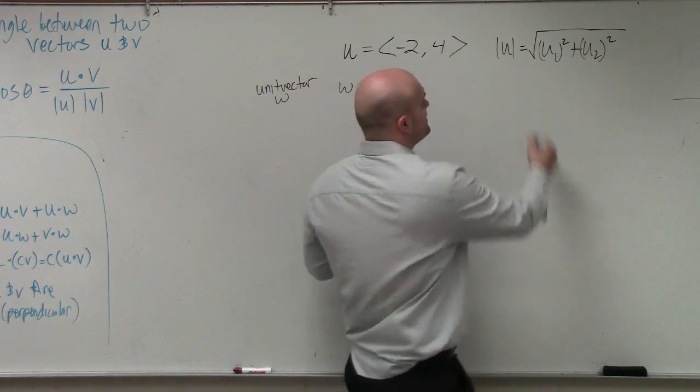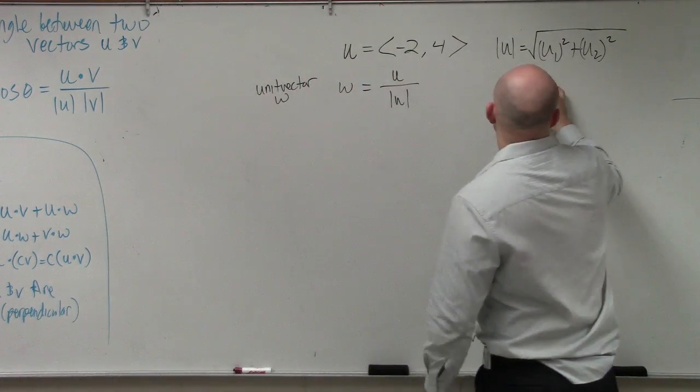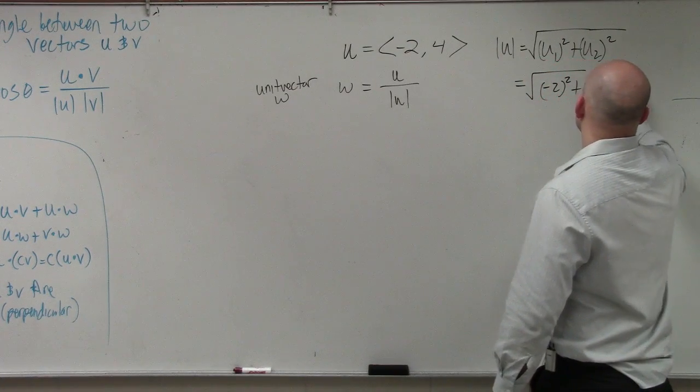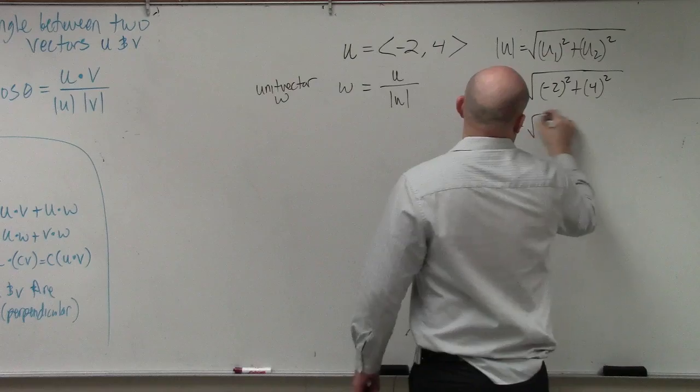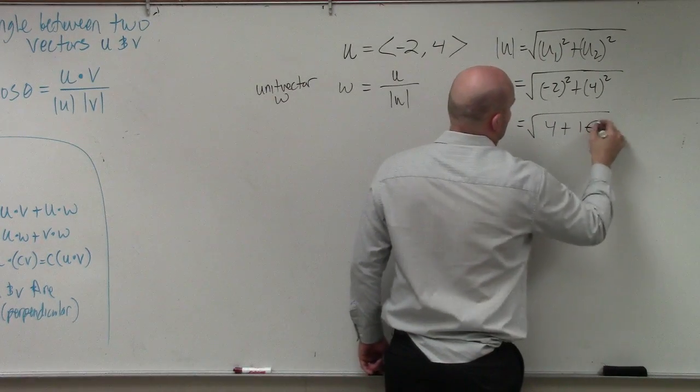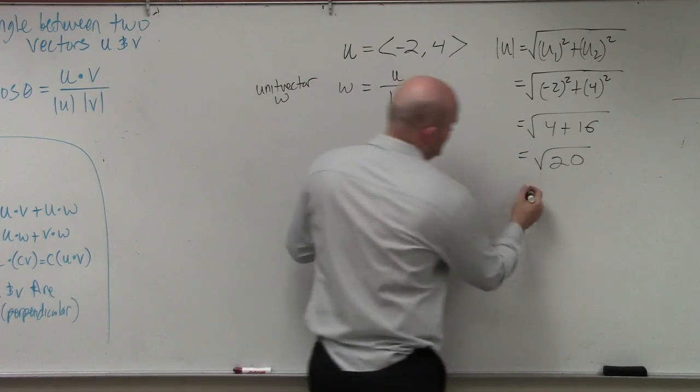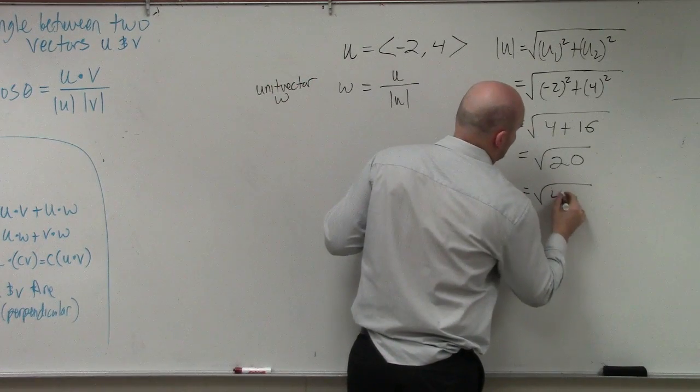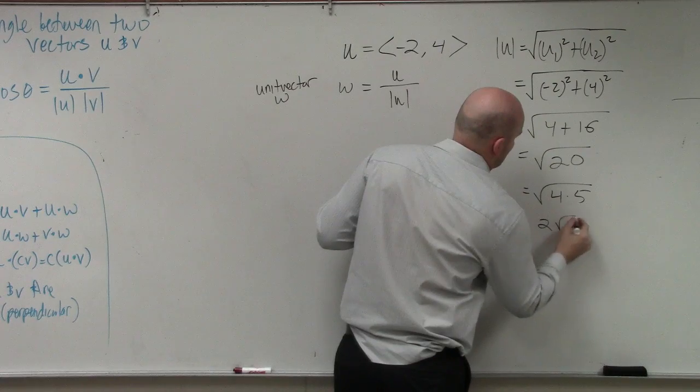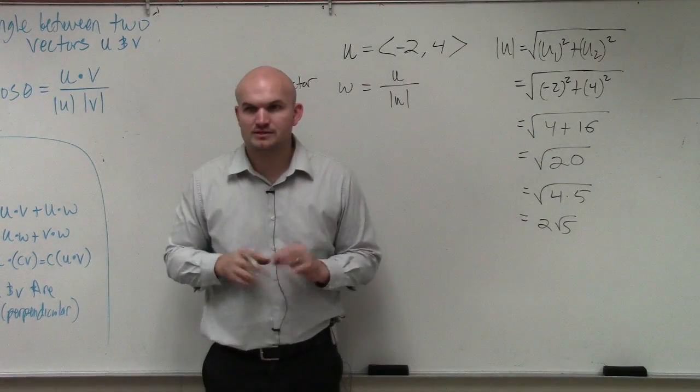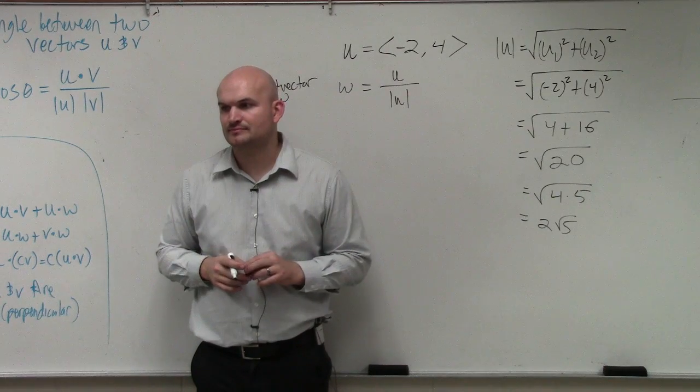Does that make sense? So therefore, the magnitude of u is square root of negative 2 squared plus 4 squared. Simplifying radicals, hopefully we're good at these by now. Is everybody OK with my magnitude, Keanu?